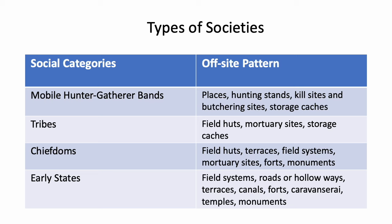All of these have repercussions for what archaeologists could expect to find in landscapes. For mobile hunter-gatherer bands, we would expect to find attractive spots on the landscape, hunting stands, kill sites, butchering sites, and storage caches. For tribal societies, we might find field huts, mortuary sites, or storage caches.